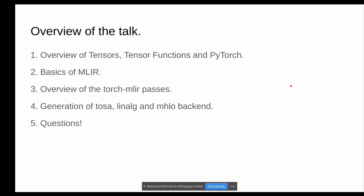The overview of the talk will cover tensors and tensor functions, and how these are represented in the PyTorch framework. Then we'll move to the basics of MLIR and how we transform a PyTorch graph into a Torch MLIR graph. We'll also look at the different passes that raw MLIR goes through, and we'll see the generation of TOSA, LinAlge, and MHLO dialects — or backends, as called in Torch MLIR.